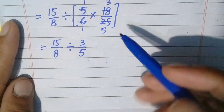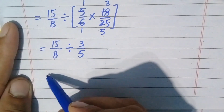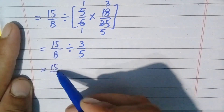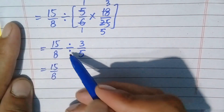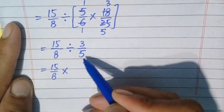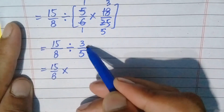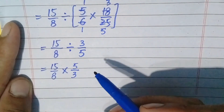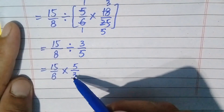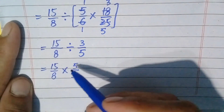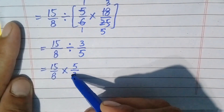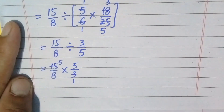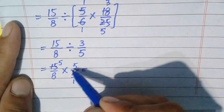Now only one operation is left: division. To divide two fractions, write the first fraction as the same — 15/8 — change the division to multiplication, and take the reciprocal of the second fraction, so 3/5 becomes 5/3. Now simplify: 3 and 15 are both divisible by 3, so 3 times 1 is 3, 3 times 5 is 15.